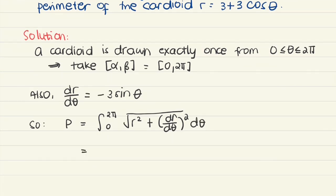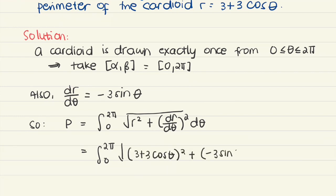We substitute the equations: r is 3 plus 3 cosine theta quantity squared, and dr over d theta is negative 3 sine theta quantity squared. So we finally have the integral for the perimeter.